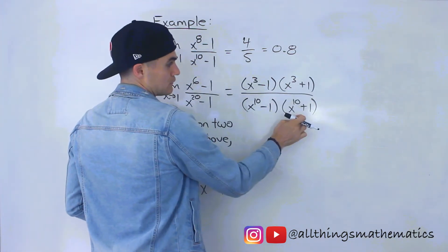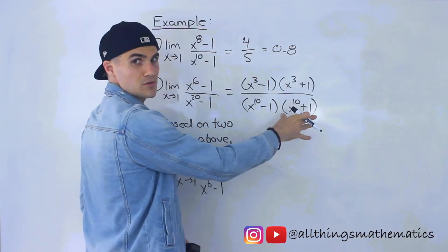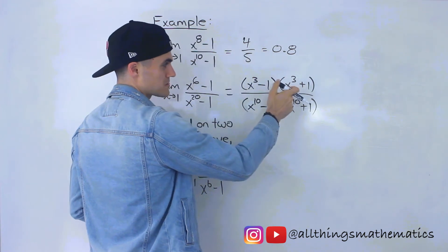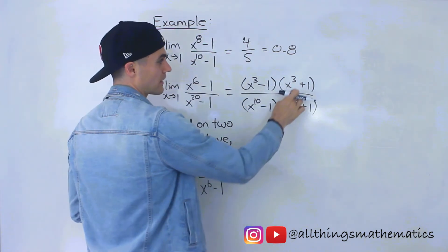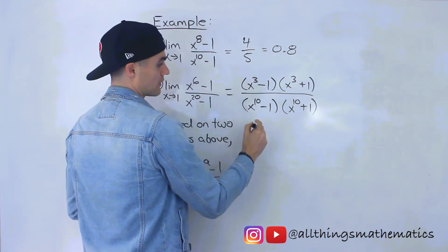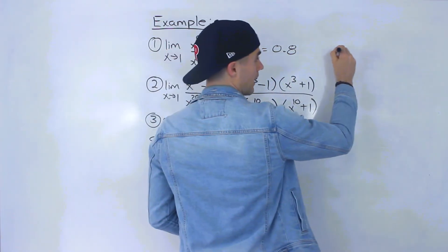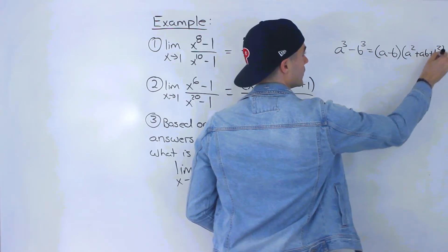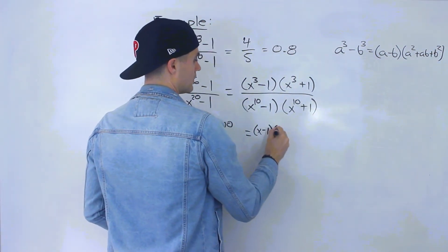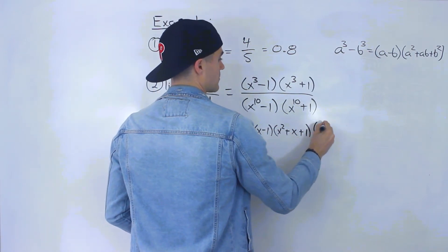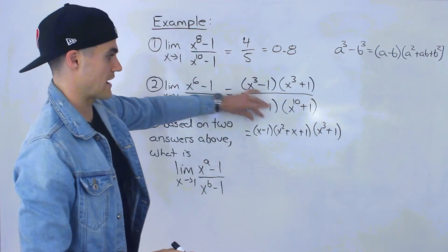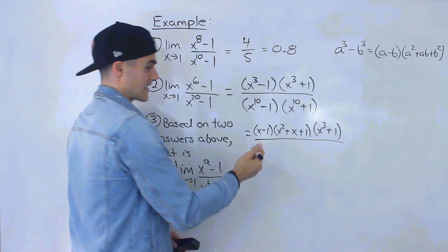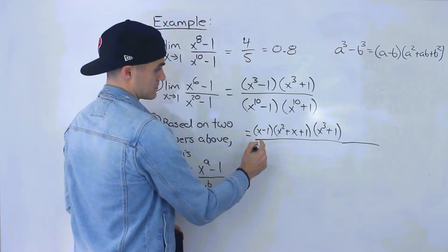The brackets x to the power of 3 plus 1 and x to the power of 10 plus 1 don't produce x minus 1 when substituting 1, so we leave those. For x to the power of 3 minus 1, applying the difference of cubes formula gives x minus 1 times x squared plus x plus 1. For x to the power of 10 minus 1, we use the exact same result from the first problem: x minus 1, times x to the power of 4 plus x cubed plus x squared plus x plus 1, times x to the power of 5 plus 1.